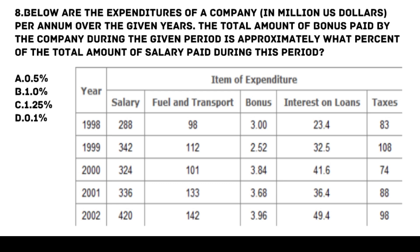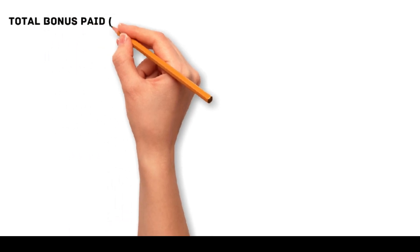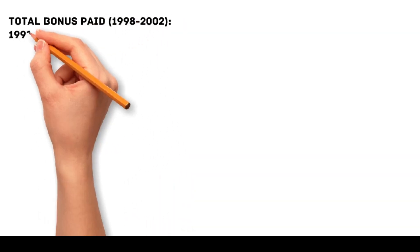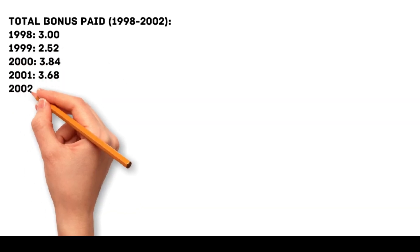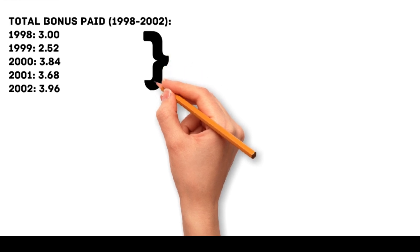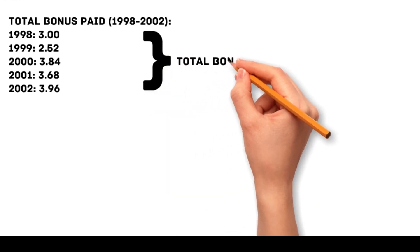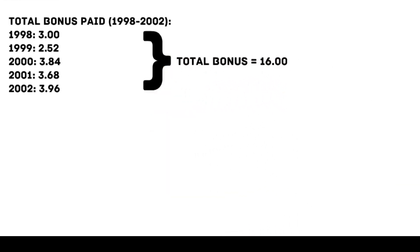To find the percentage of total bonus paid compared to total salary paid from 1998 to 2002, we sum both. Total bonus paid: 1998 = 3.00, 1999 = 2.52, 2000 = 3.84, 2001 = 3.68, 2002 = 3.96, totaling 16.00 million.